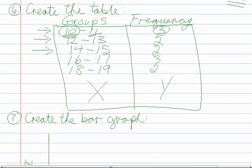In step six we created the table and we had decided that in the first group the first mark would be ten, because it's the first mark in our ordered list from smallest to largest in step two.